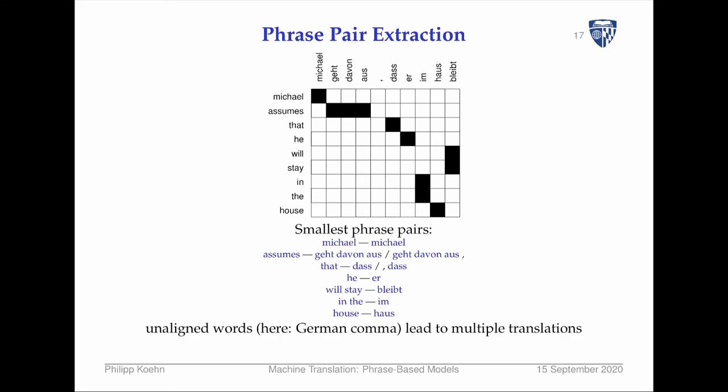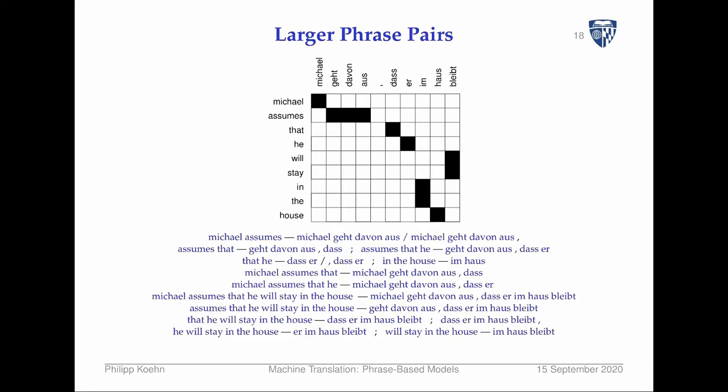In practice, the smallest phrases you can extract are just the individual alignment blocks. So 'assumes' corresponds to one phrase here. Then we extract bigger phrases — neighboring blocks: 'Michael assumes' maps to all corresponding German words. And we keep doing this.